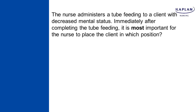Let's look at this question. The nurse administers a tube feeding to a client with decreased mental status. Immediately after completing the tube feeding, it is most important for the nurse to place the client in which position? 'Most important' signals that discrimination is required. So, am I trying to prevent or promote something? When a client has a tube feeding, I'm always concerned about aspiration — I want to prevent it — and I also want to promote stomach emptying. Those are my principles as I look at the answer choices.